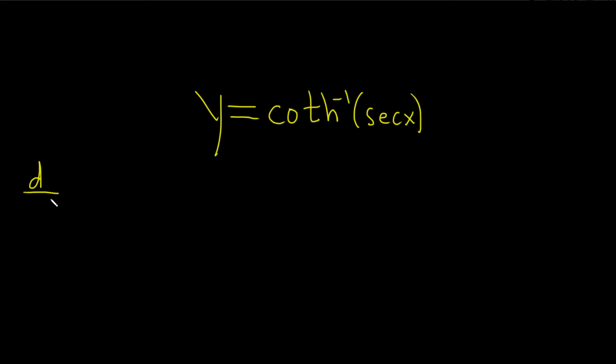So we're going to need this formula. If you take the derivative with respect to x of the inverse hyperbolic cotangent function, the formula for this is 1 over 1 minus x squared.